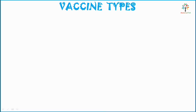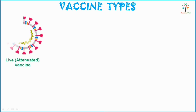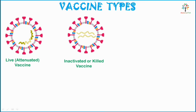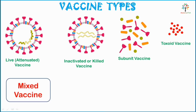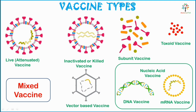Next, different types of vaccines. Vaccines may be prepared from live modified organisms, known as live vaccines or attenuated vaccines. Then there are inactivated or killed vaccines, where microorganisms are killed or inactivated. Then subunit vaccines, where some parts of the organism are used. Then toxoid vaccines, mixed vaccines, vector-based vaccines, and nucleic acid vaccines, which include DNA vaccines and mRNA vaccines.